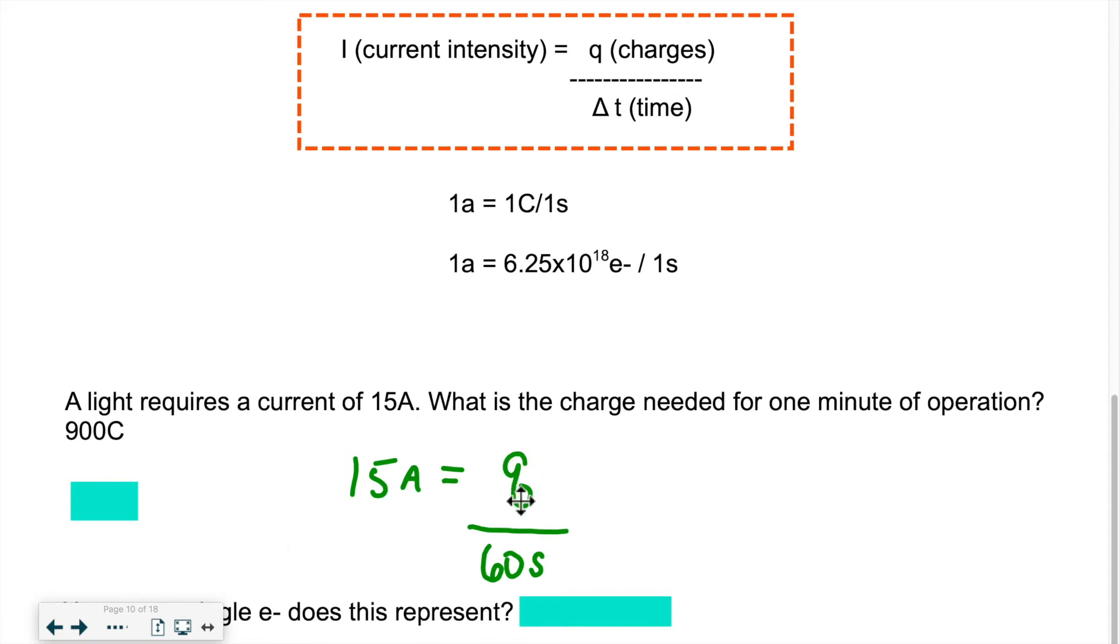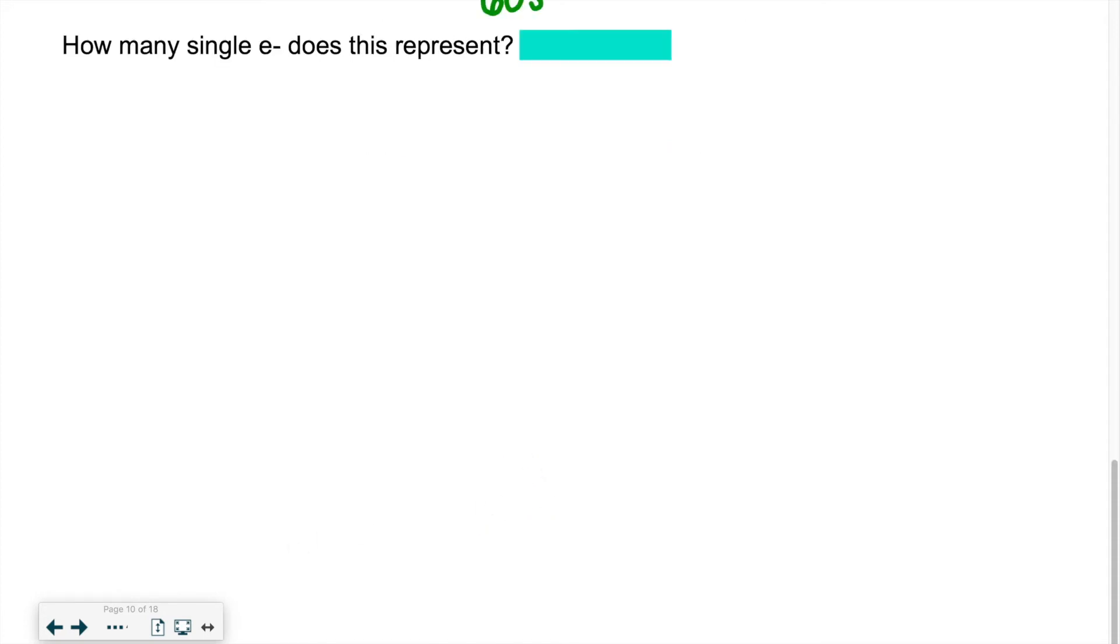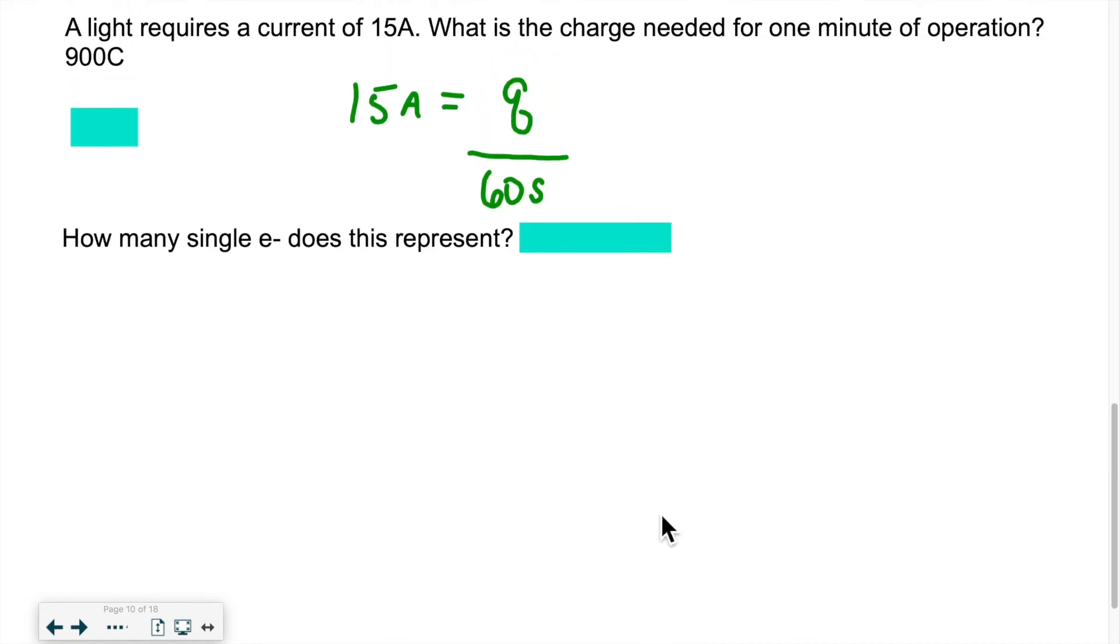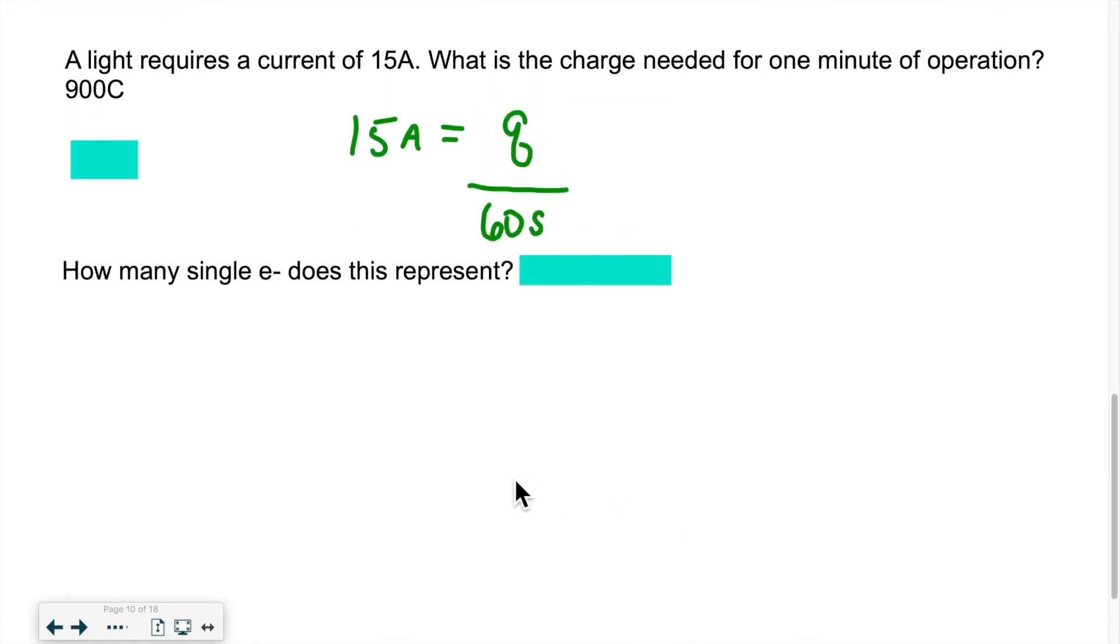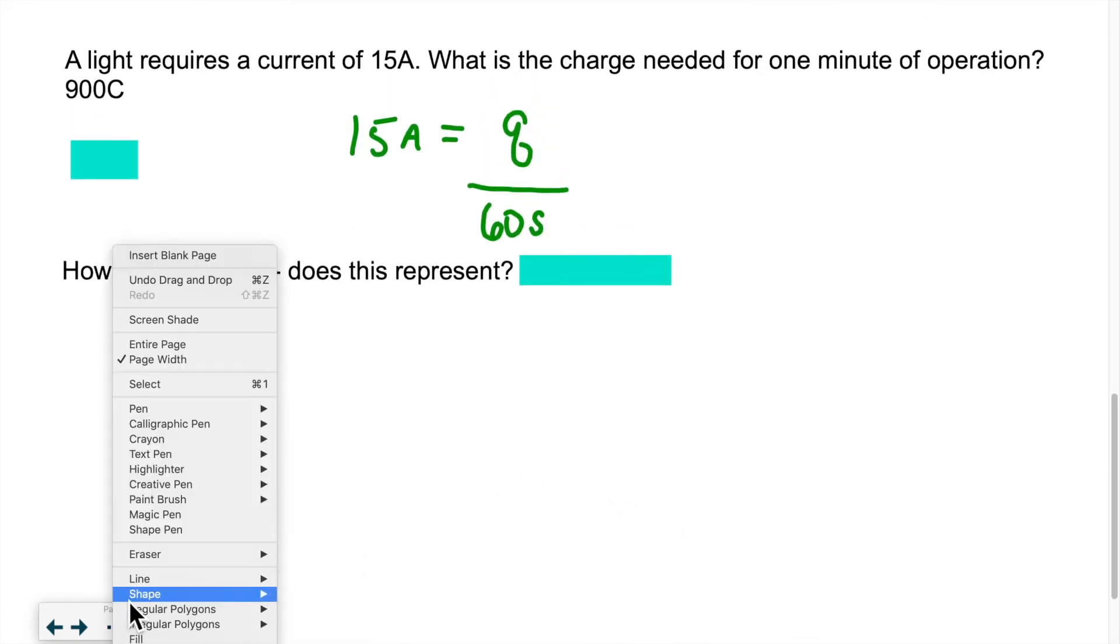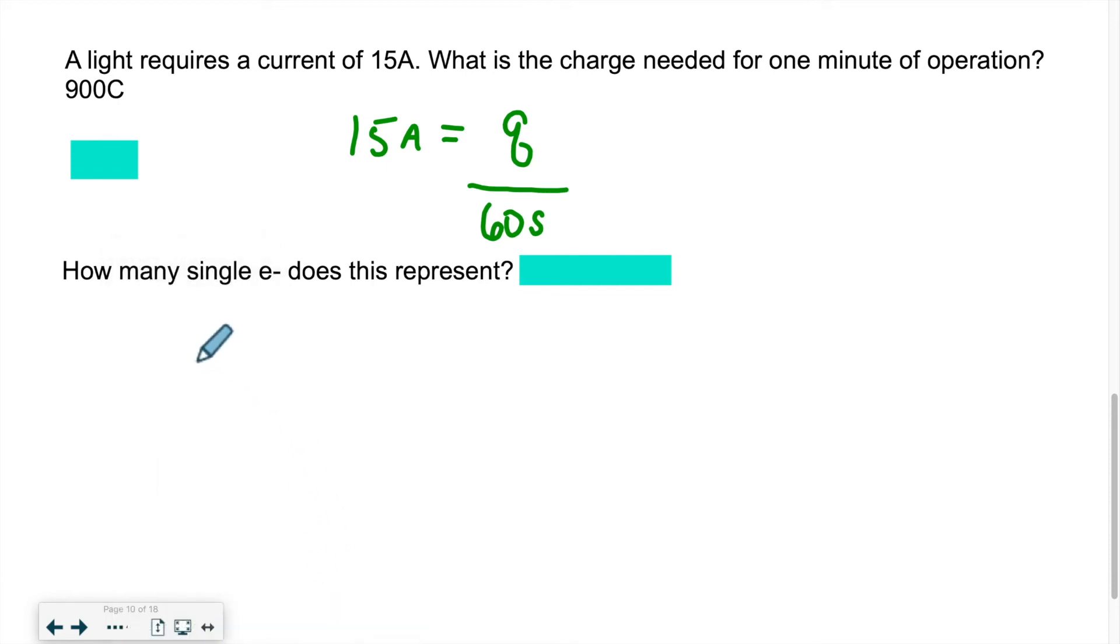Q is equal to 900 Coulomb. Now if we look at the follow-up question, how many single electrons does this represent? Now we have to use our famous Coulomb number.